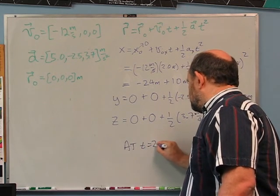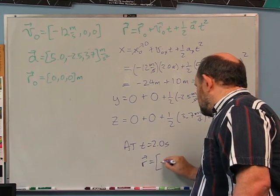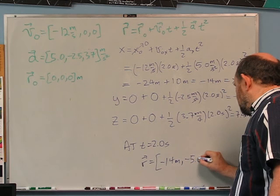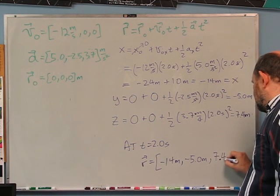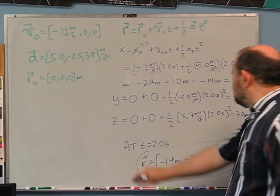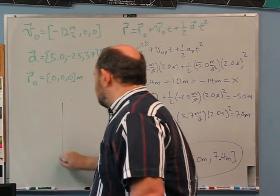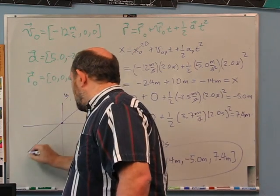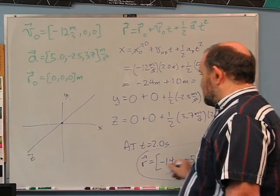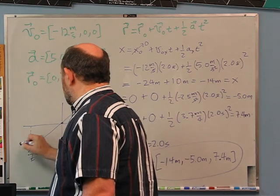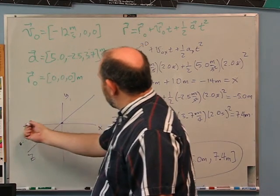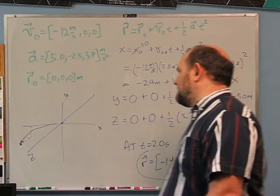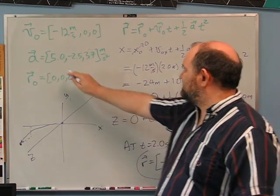At t = 2.0 seconds, the position of the particle is (-14 m, -5.0 m, 7.4 m). It starts at the origin moving in the minus x direction, ends up at negative x, negative y, and positive z — following a three-dimensional curved path. If it kept going, the positive x acceleration would eventually turn it around.